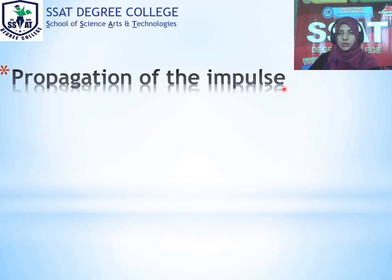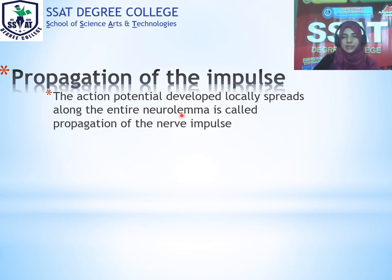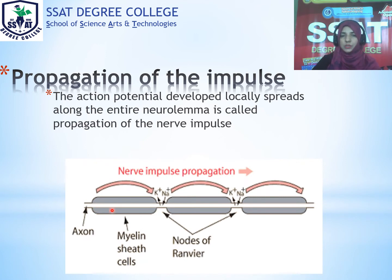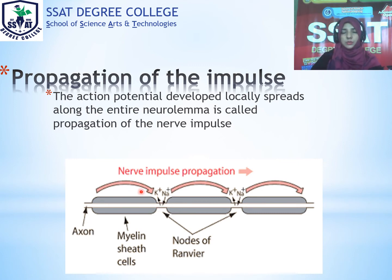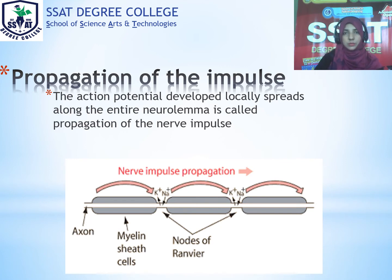Propagation of impulse: the action potential developed locally spreads along the entire neurolema — this is called propagation of nerve impulse. The action potential that developed moves forward through the entire axon. On myelinated axons, the message transfers at the nodes of Ranvier, not across the myelin sheath. As the message moves forward through the axon, that is propagation of the impulse.